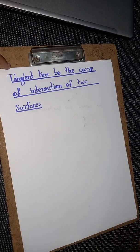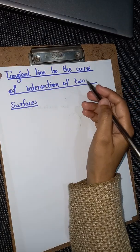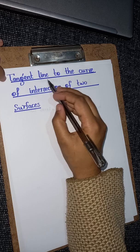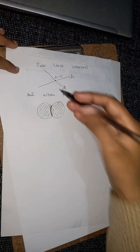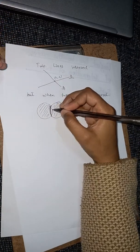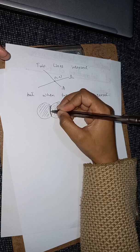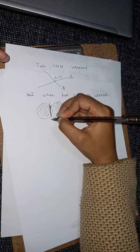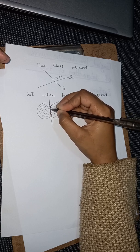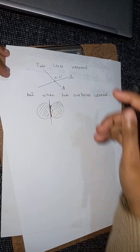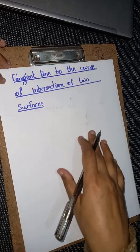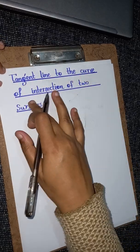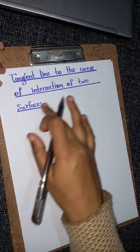Now let us come to our main topic. We have to find the tangent line to the curve — basically we are asked to find a tangent line along this kind of curve. As you can see, this is a tangent line to this curve, but it would be different for different curves. Tangent line to the curve of intersection of two surfaces.